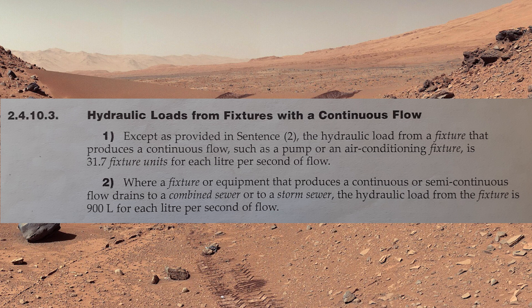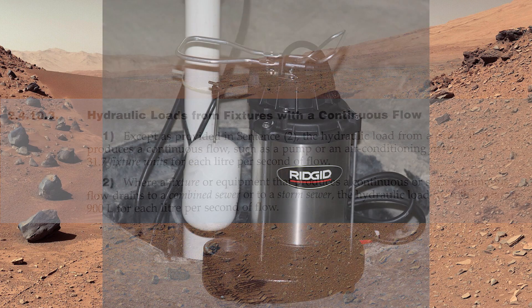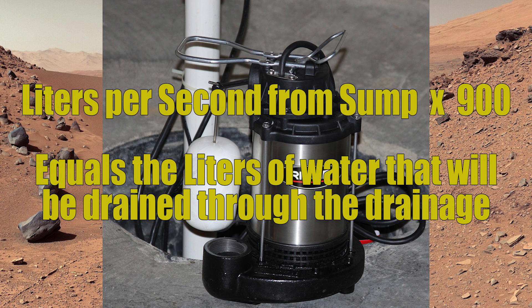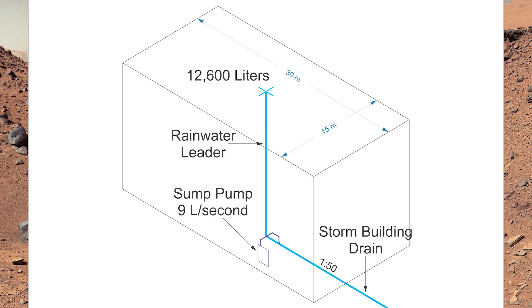Simply put, a fixture that produces a continuous or semi-continuous flow is a sump. We need to find out how many liters per second will flow through the sump so we can multiply that number by 900. That will tell us how many liters we will dump into our storm building drain — or according to this clause, a combined building sewer. This building should look familiar from previous videos: a simple flat roof building with 12,600 liters coming down the rainwater leader.